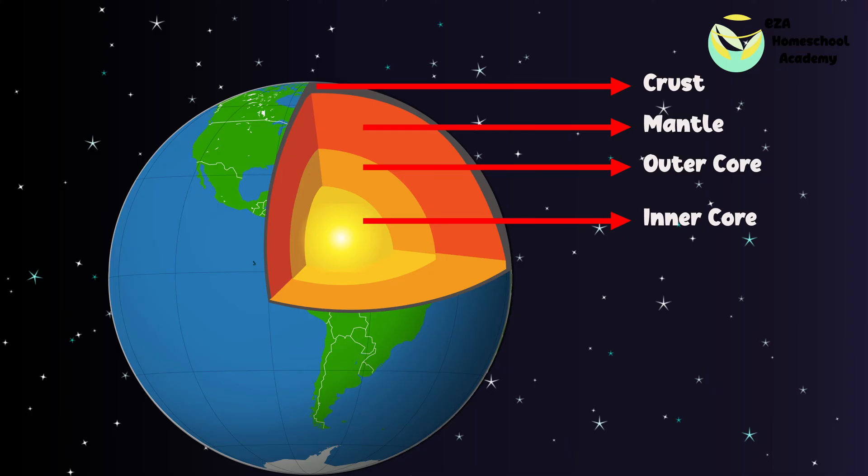The mantle, right below, is almost solid. The top layer of the mantle and the crust together form the lithosphere. Just below the mantle is the outer core. This is an ever-moving layer of nickel and iron. The inner core of the Earth is solid and made up of mostly iron.